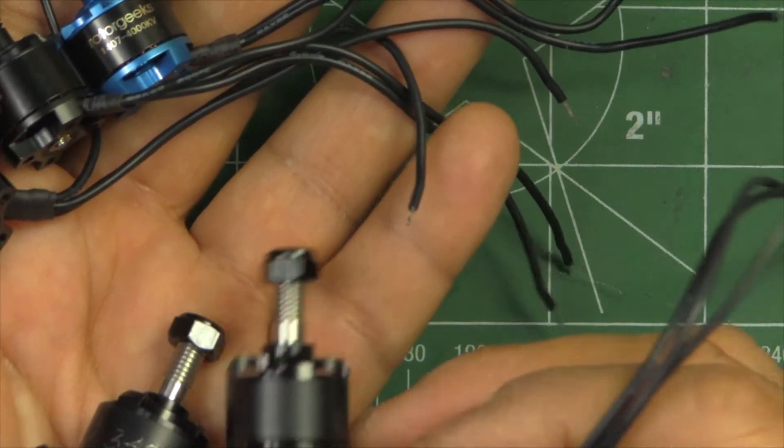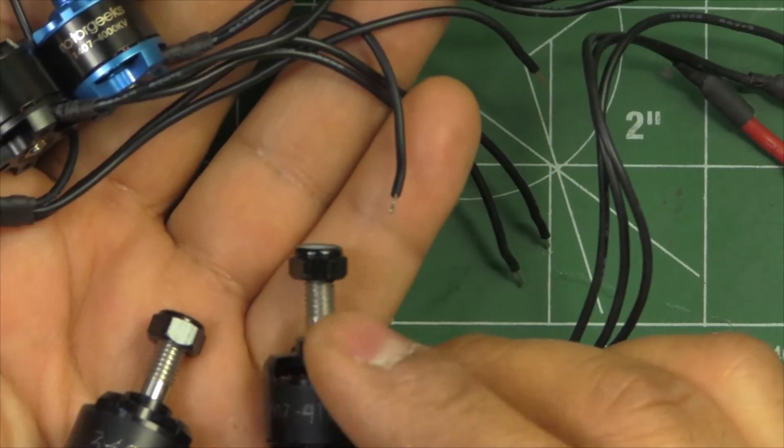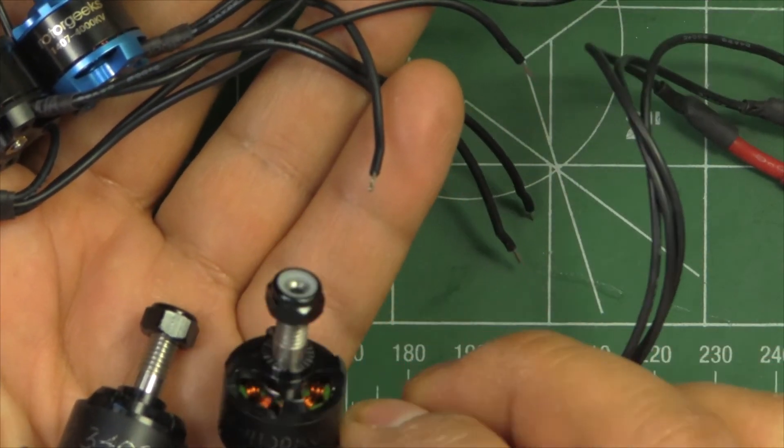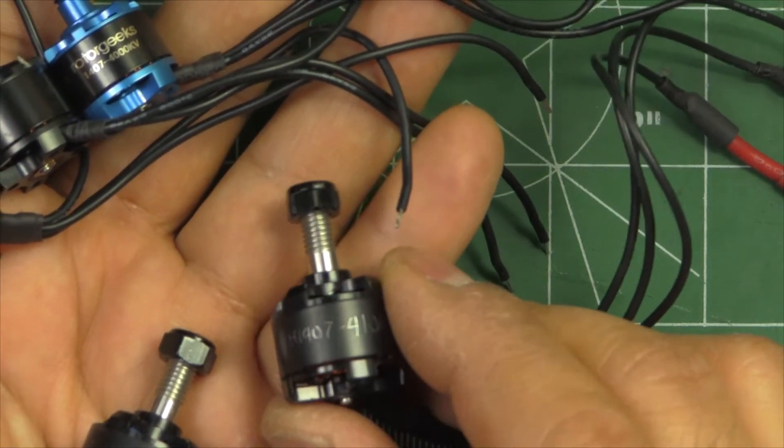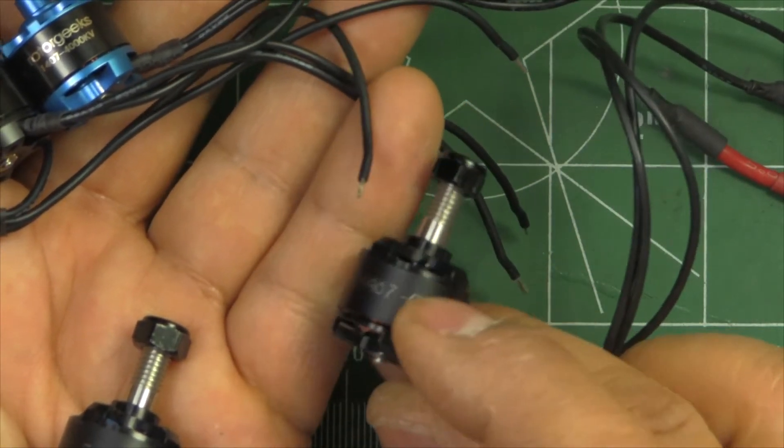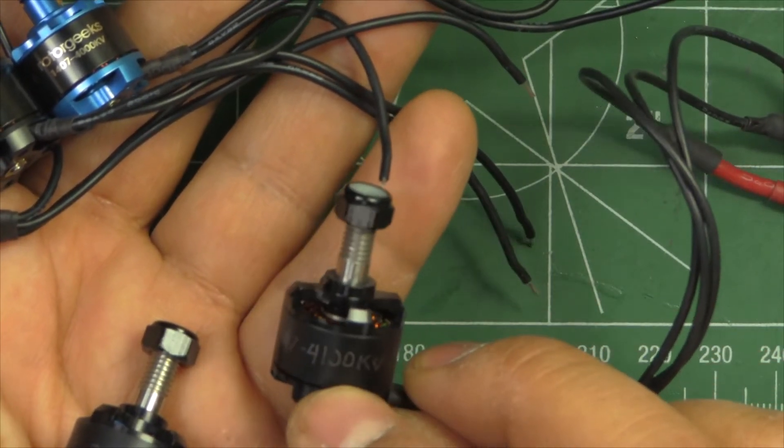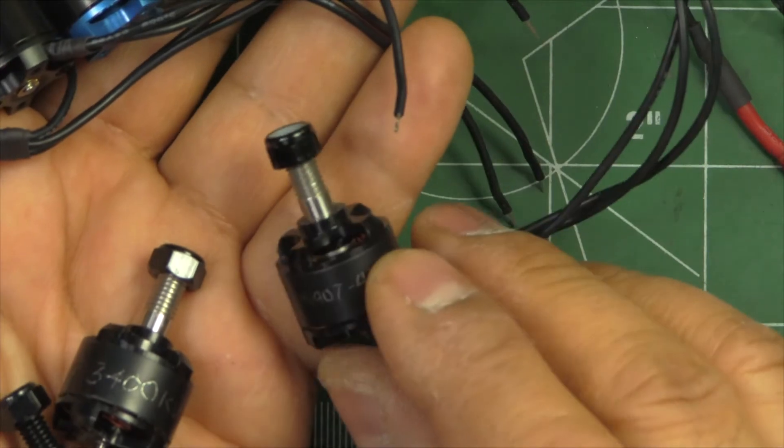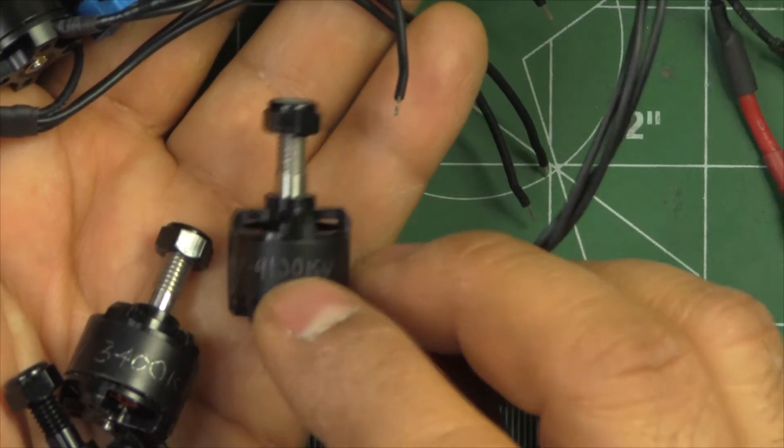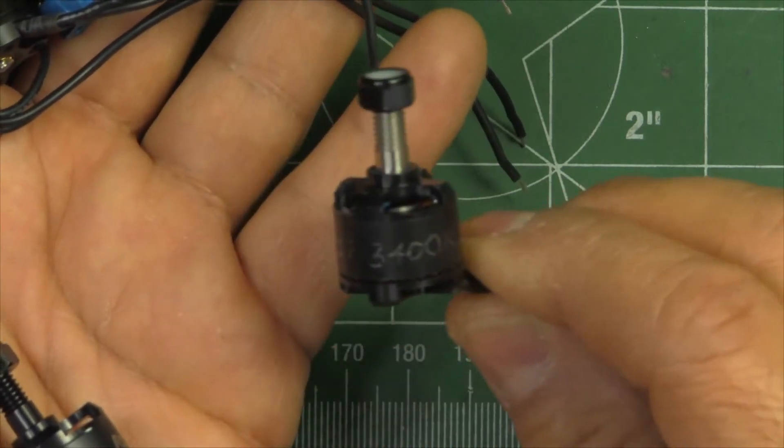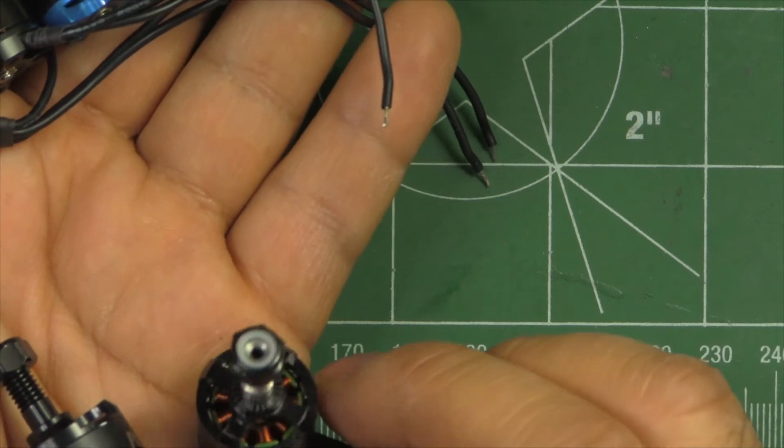These were sent this week by My RC Mart. These are prototypes from RCX motors. As you can see, they don't even have labels, so I just went ahead and inscribed the KV values because I don't want to get them confused. This one's a 1407 4100 KV and a 1407 3400 KV.